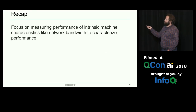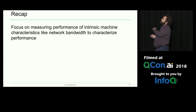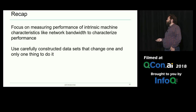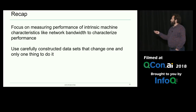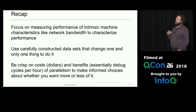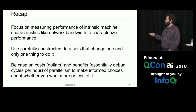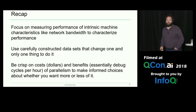Recap: when characterizing parallel performance, focus on measuring things intrinsic to the machine — effective network bandwidth, effective file access latency, and so on. To do this, use carefully constructed data sets that change one and only one thing. And if you're trying to figure out whether you're getting your money's worth out of your current level of parallelism, be crisp on costs — basically dollars — and benefits — essentially debug cycles per hour. Then you can make informed choices. That's it, thank you.